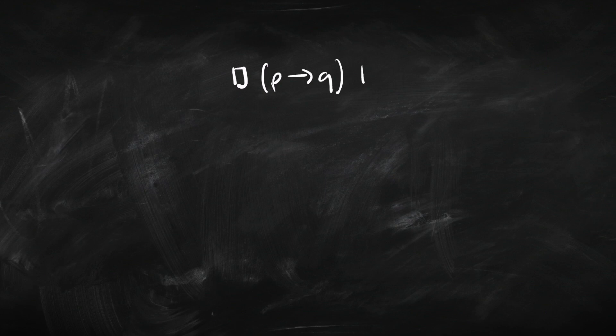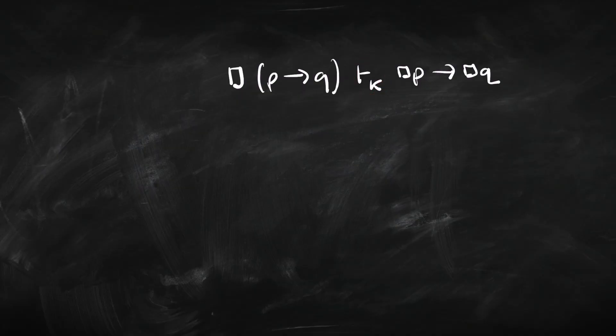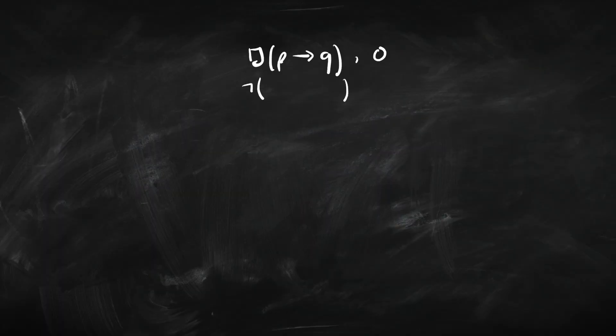We're going to be doing a proof in basic modal logic K, and we're going to show that this conclusion follows from this premise. This entailment is really closely related to the distribution axiom. If we had an arrow instead of that symbol, this would be the distribution axiom, and that's something that's valid in all modal logics. So we kind of know in advance that this tree is going to close. First of all, we write down the premise and put a zero — that's the tag we use. We always start off with zero, and then we write down the negation of the conclusion, again with the tag zero.